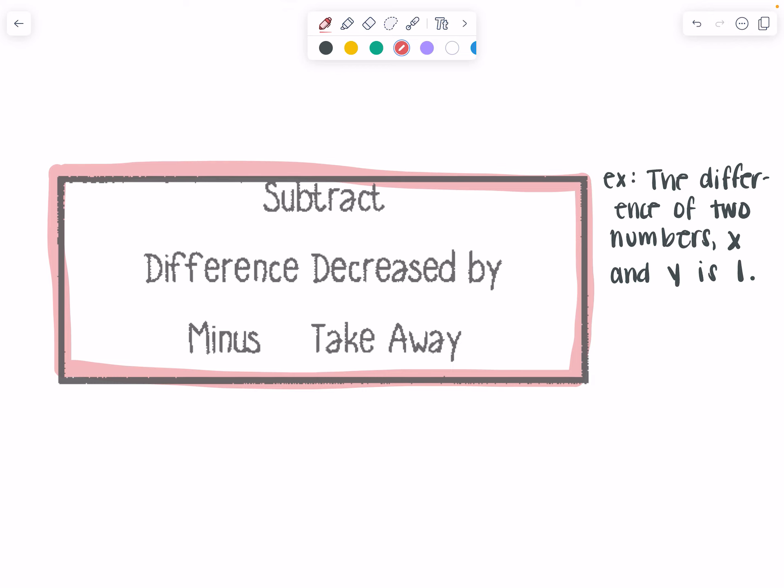Any of the numbers inside this are going to alert you to subtraction. So our example is the difference of two numbers x and y is 1. So the difference is going to be subtraction. And what am I subtracting? x and y. So I've got x minus y, and then they have is 1, so equals 1.